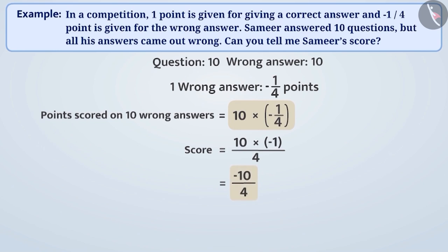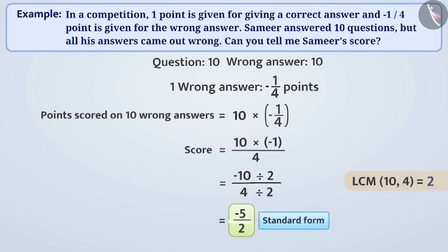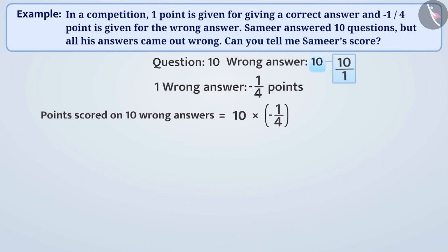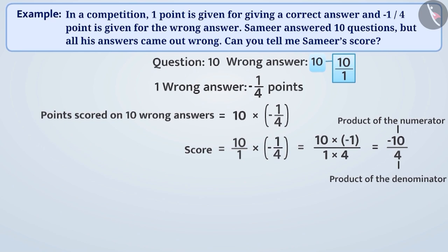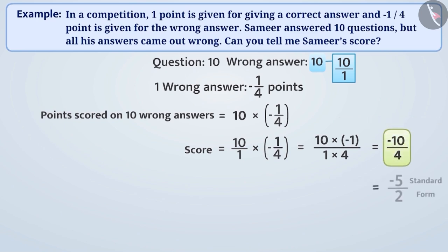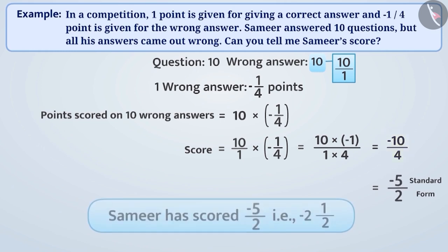The LCM of the numerator and denominator is 2. We divide both numerator and denominator by 2 and the result can be expressed in standard form as minus 5 by 2. We can also solve it by writing 10 as 10 by 1, giving us 10 by 1 into minus 1 by 4. Multiplying the numerators: 10 into minus 1 is minus 10. Multiplying the denominators: 1 into 4 is 4. The result is minus 10 by 4, which in standard form is minus 5 by 2. Sameer's score is minus 5 by 2, or minus 2 and a half.